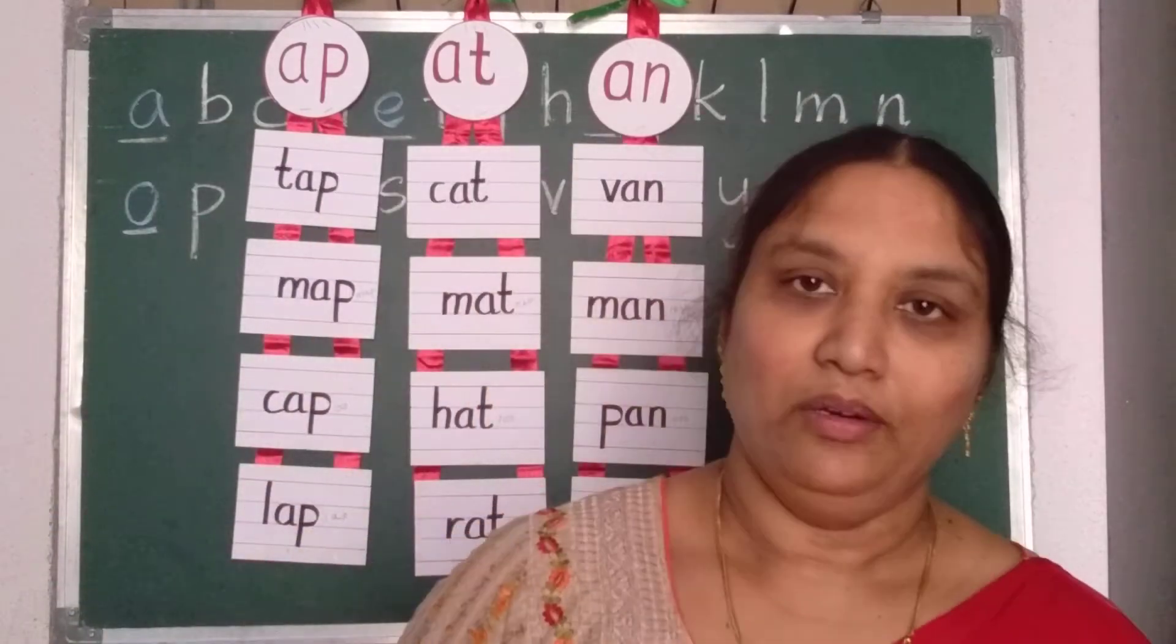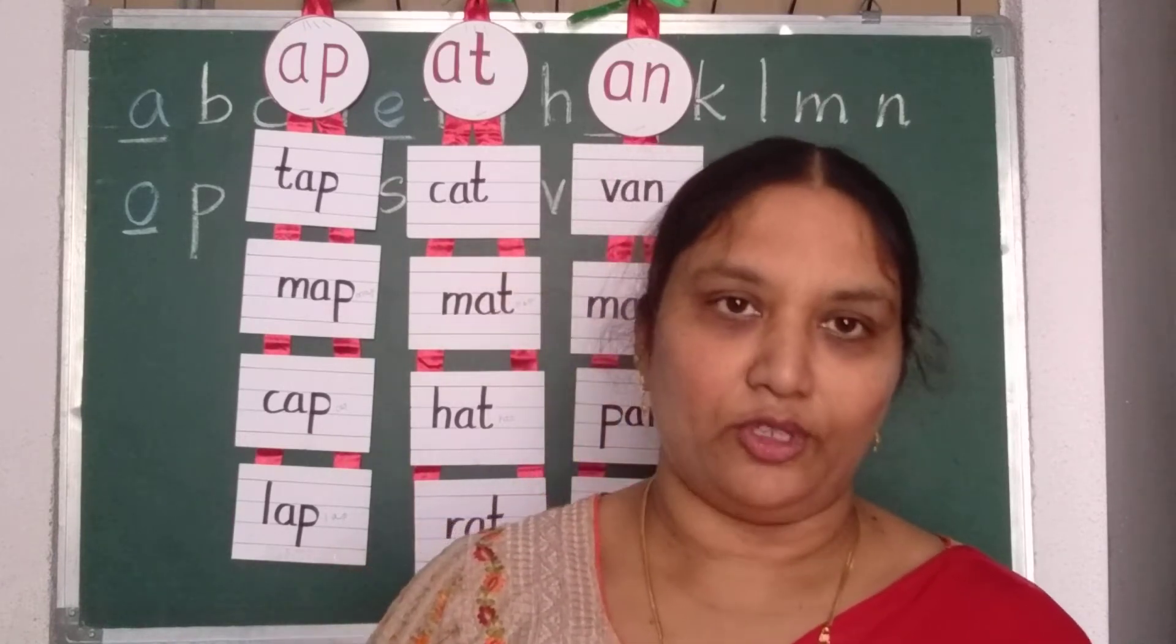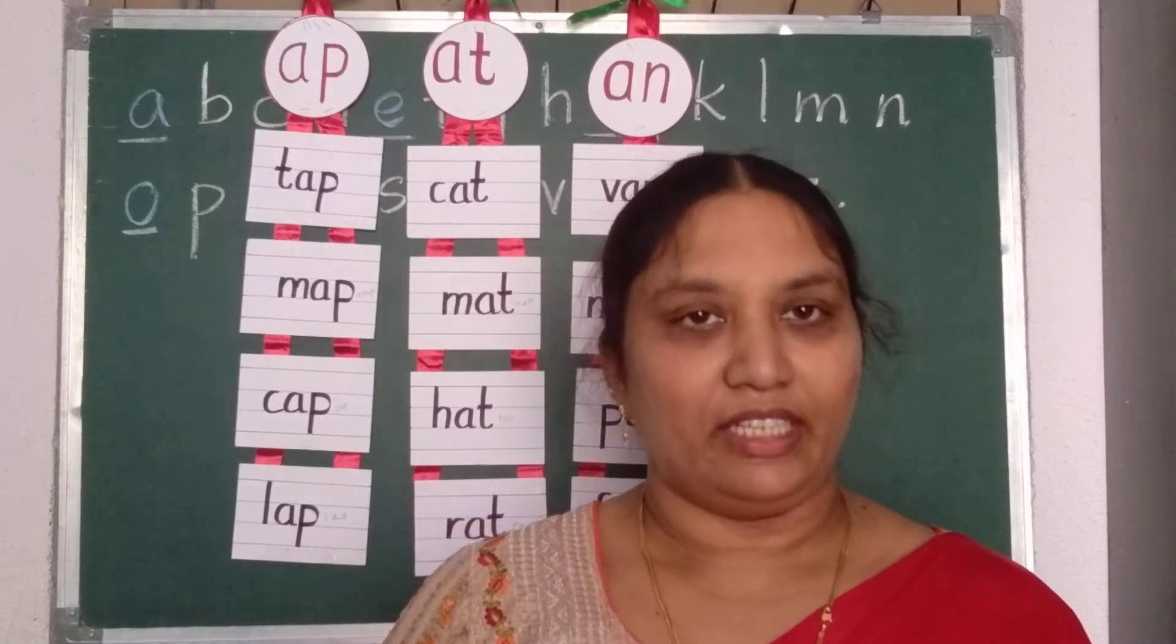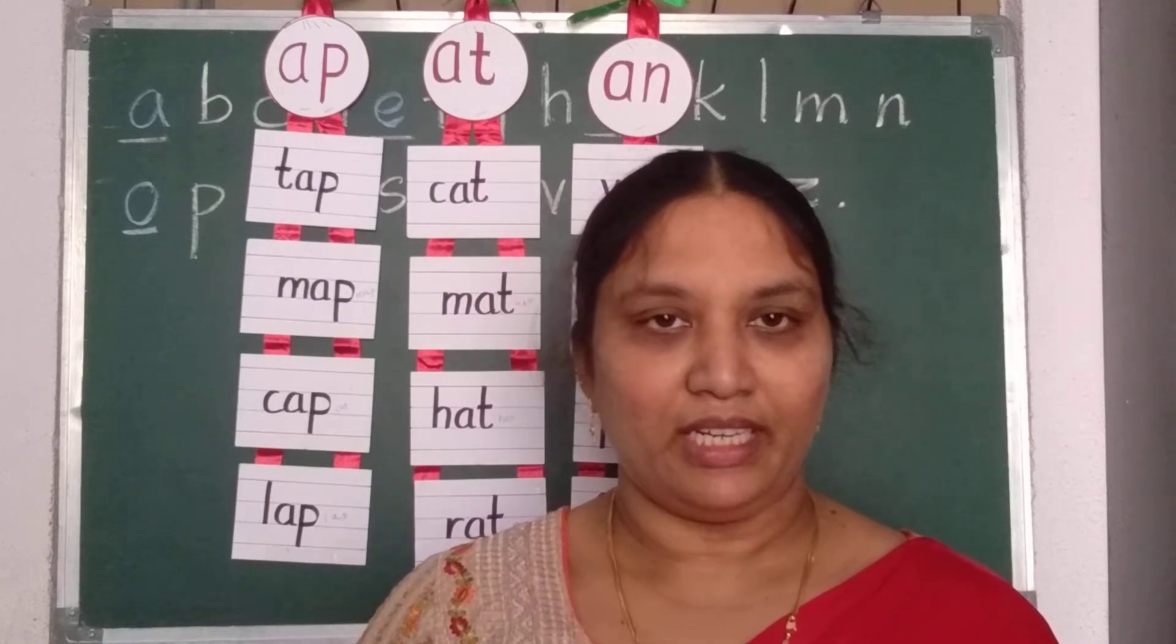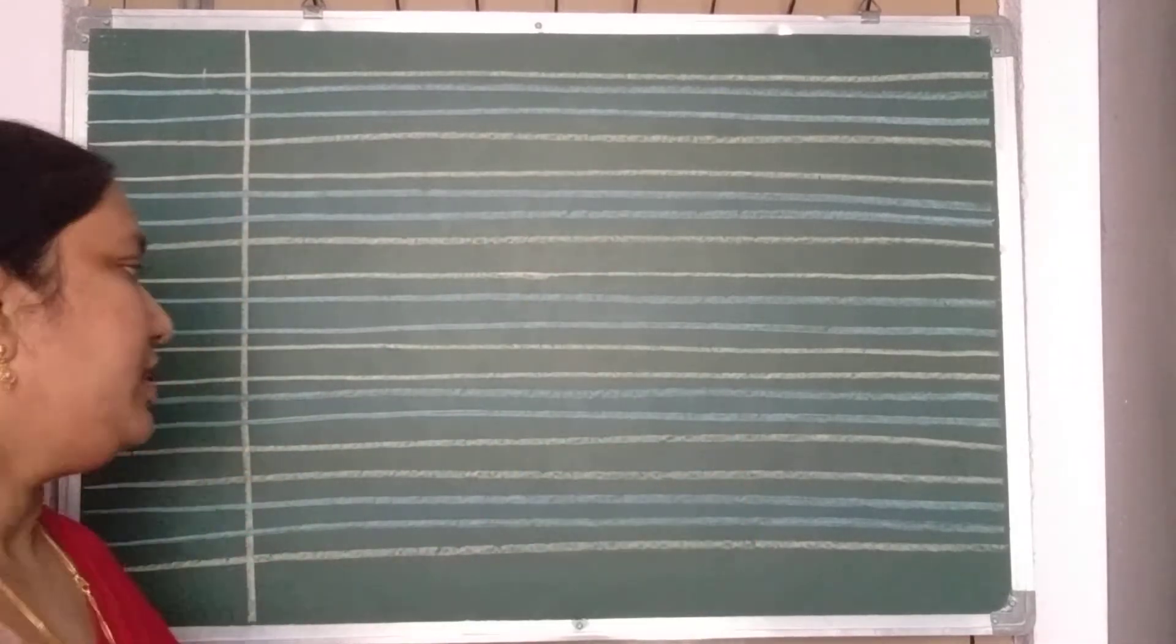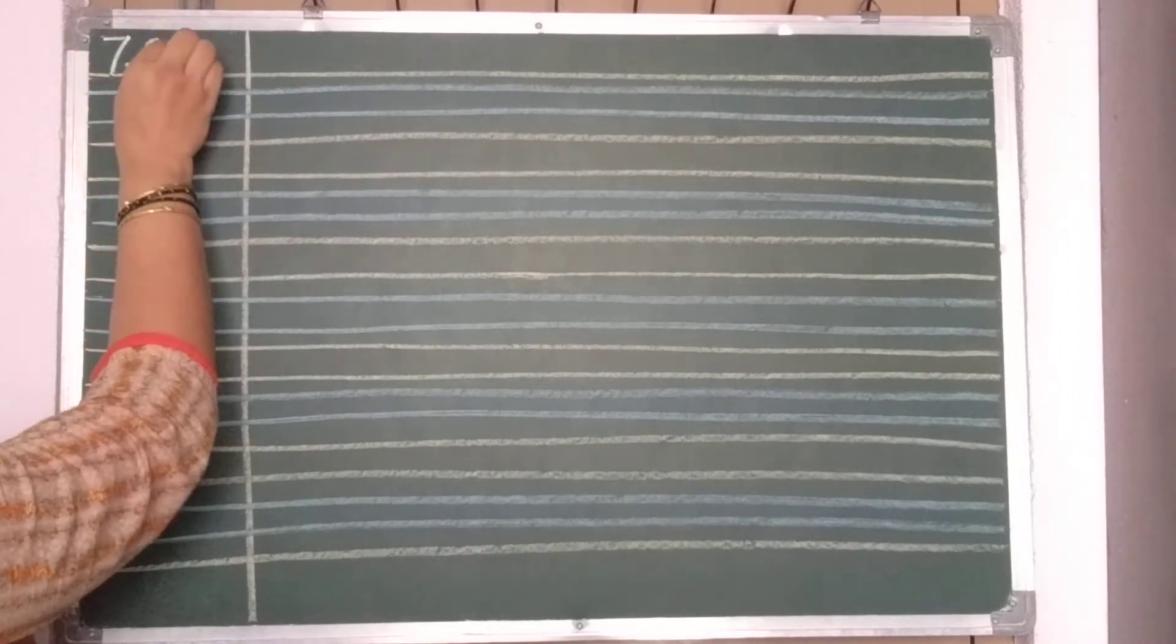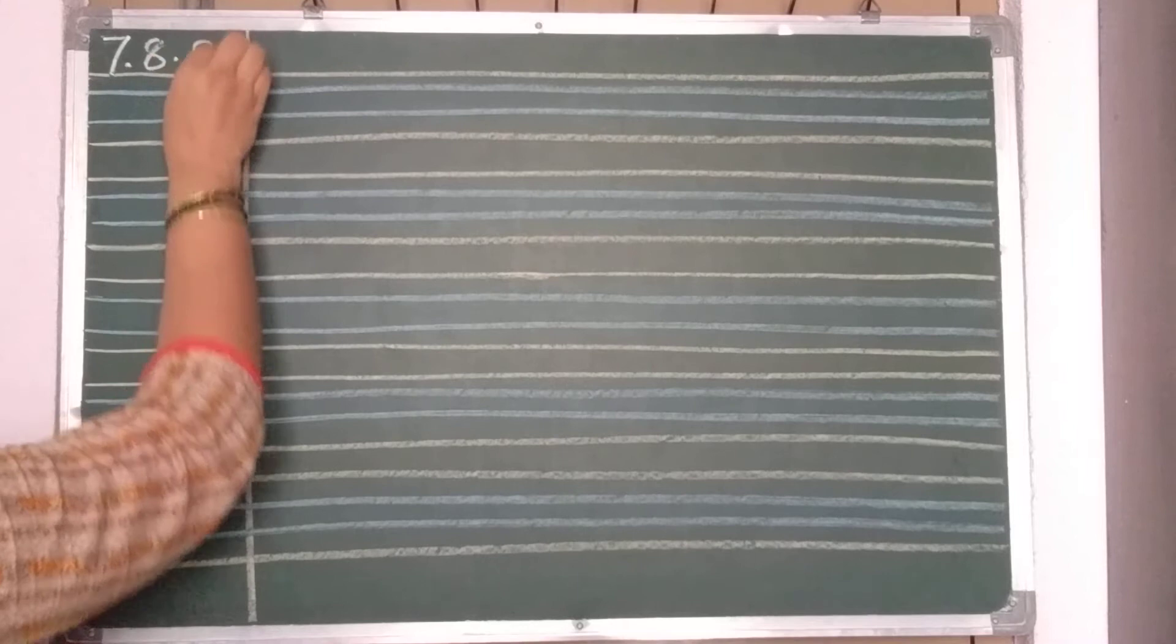Now, we are going to write A sound words in a notebook. Okay, children? Be ready with your notebooks. Open it. Now, ready children with your notebooks? Now, in a notebook, we will write here. Date, 7 dot, 8 dot, 20. This is the date.